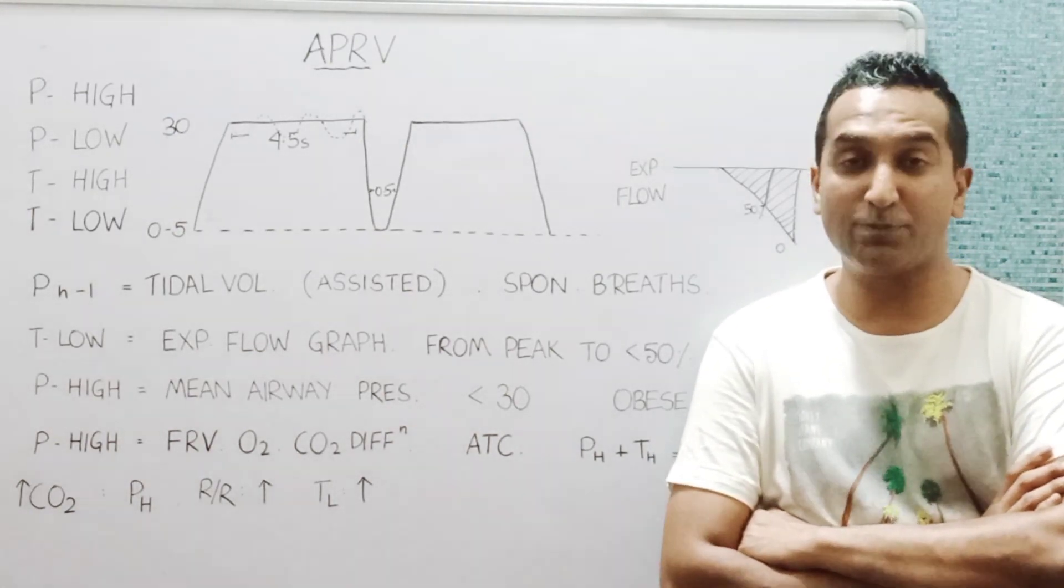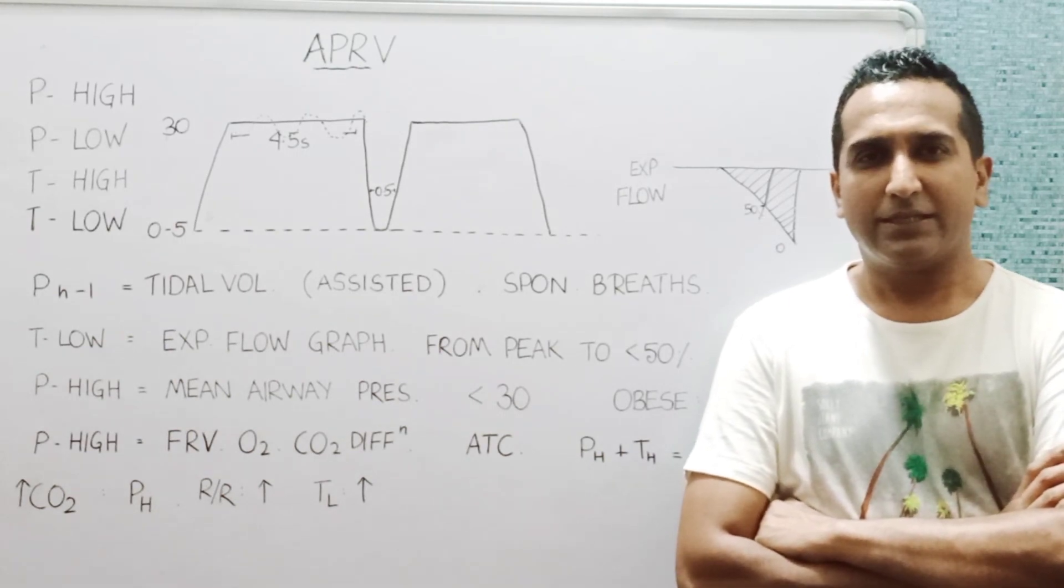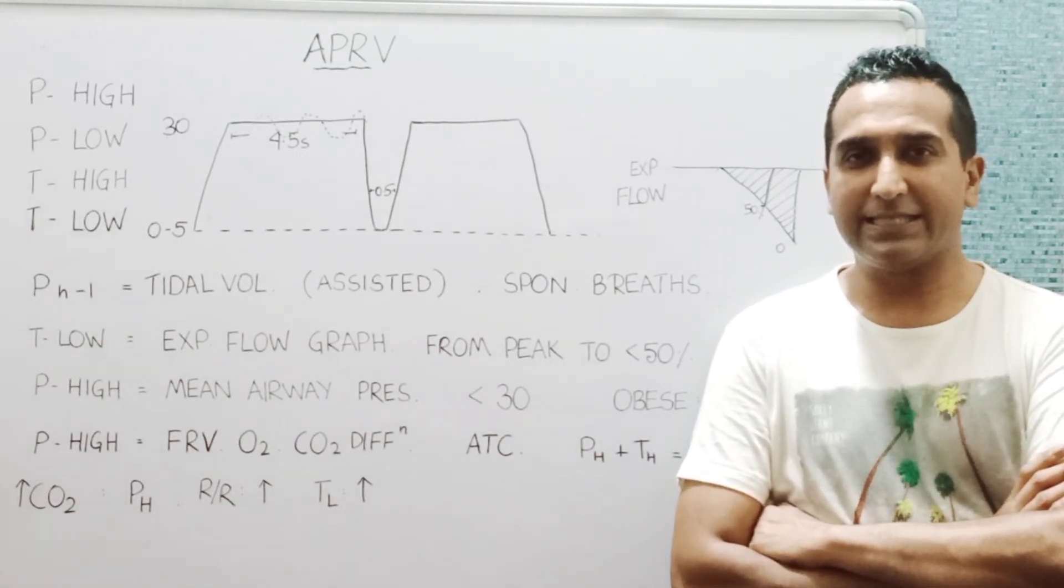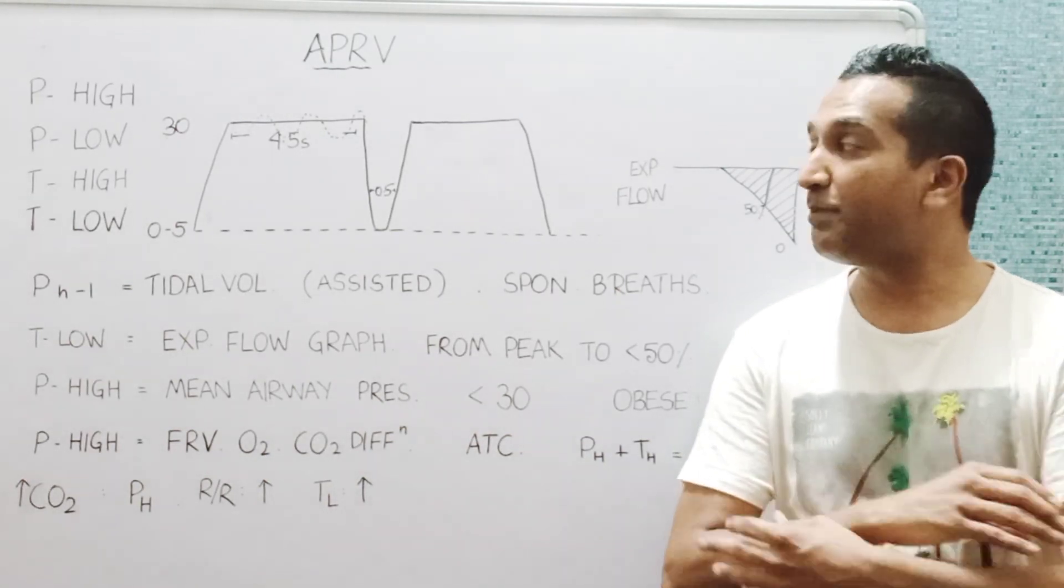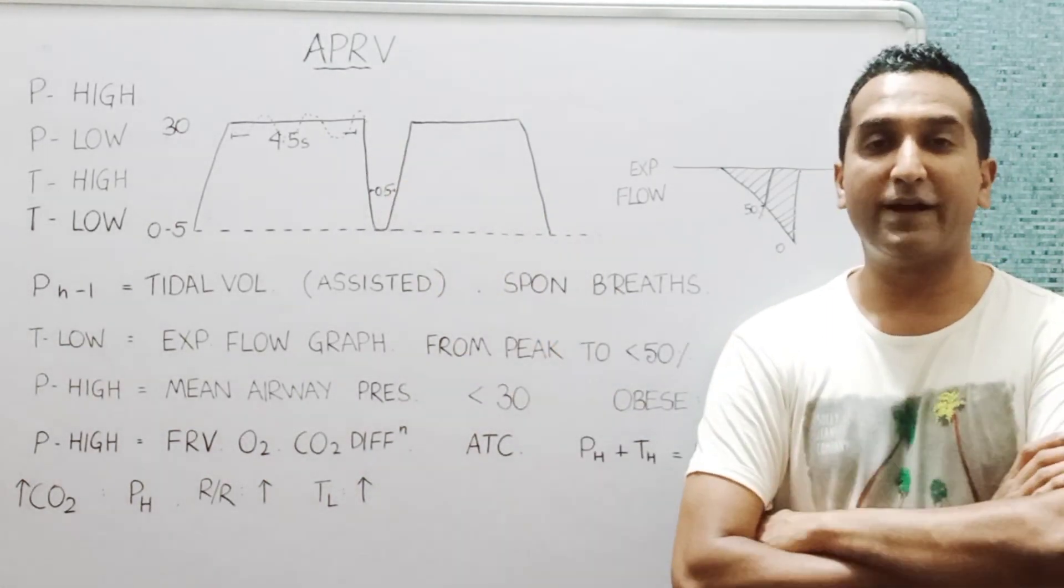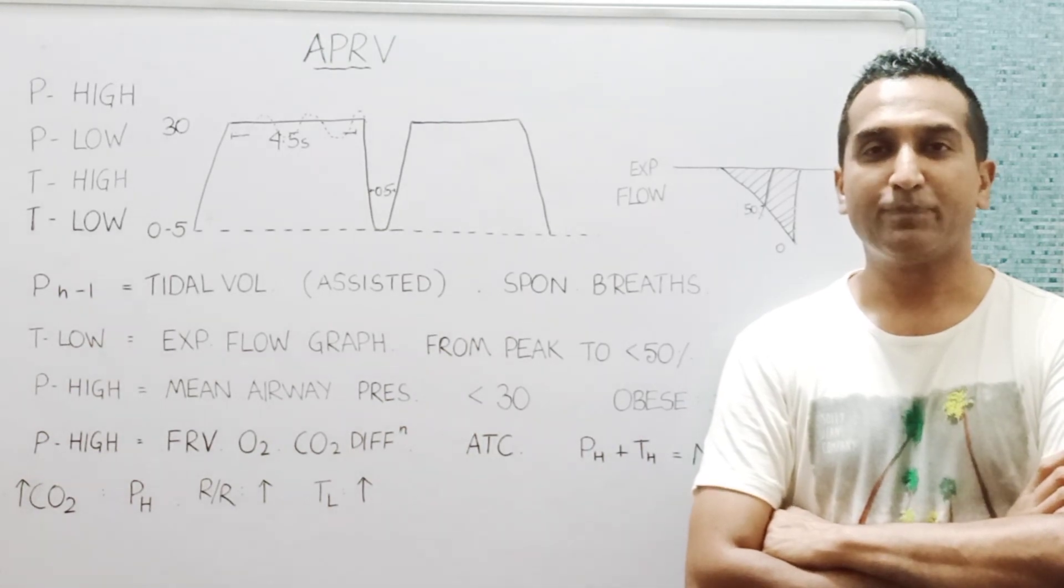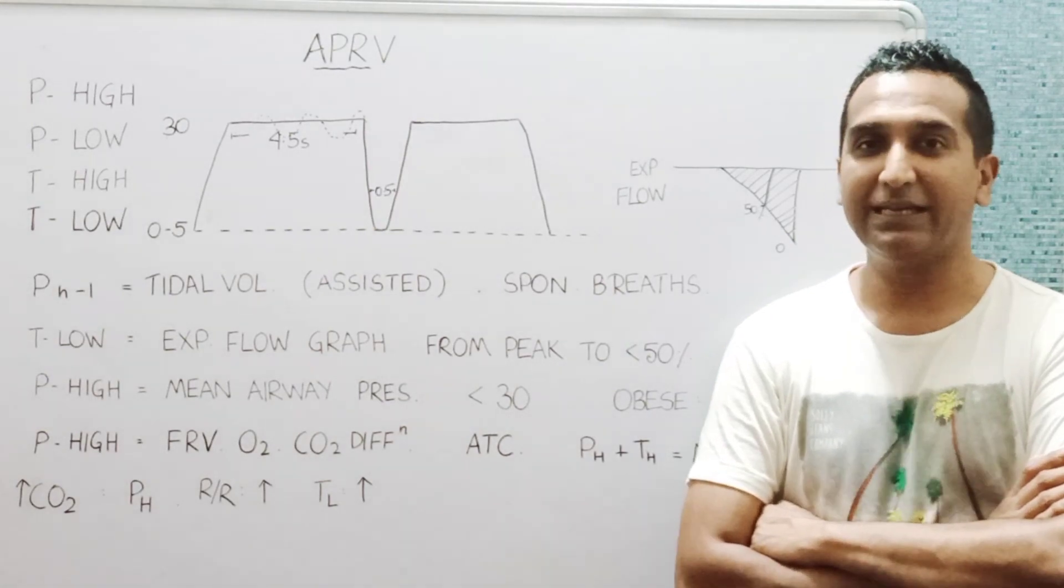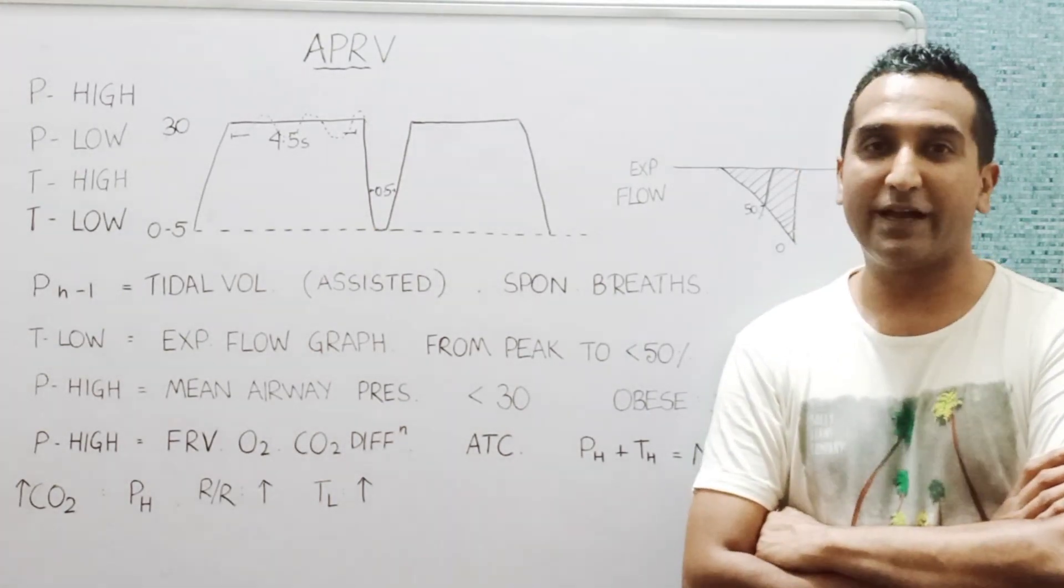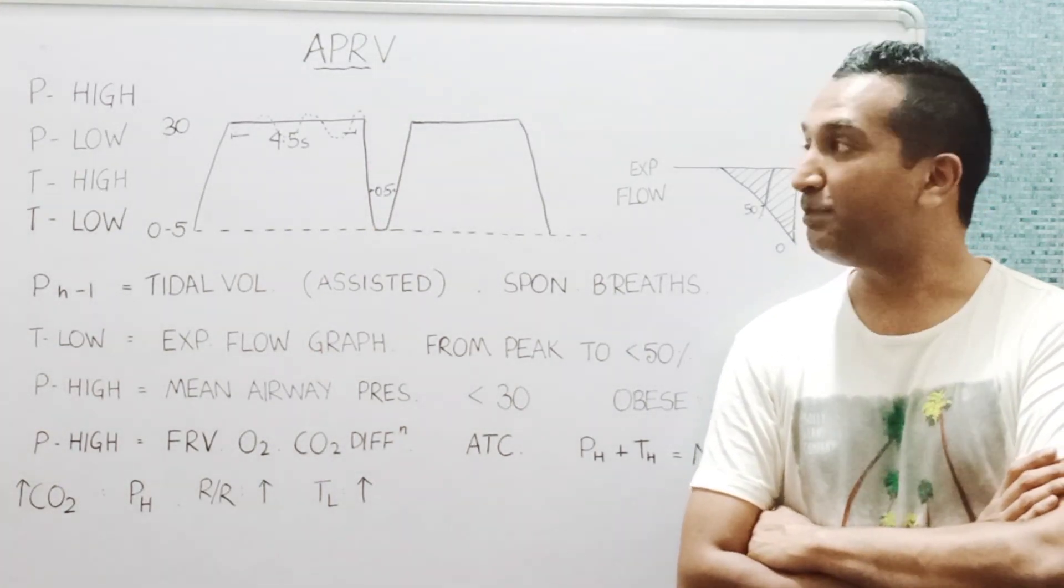With a rate of 12, let's say one cycle is of around 5 seconds. We will partition that 4.5 seconds for inspiration and 0.5 seconds for expiration, or 4.5 at P high and 0.5 at P low.